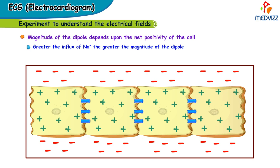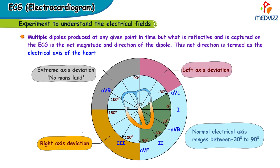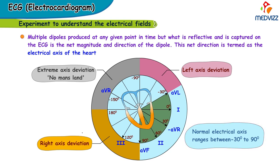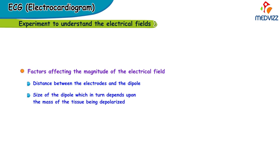Extrapolating this to the three-dimensional heart, there are multiple dipoles produced at any given point in time, but what is captured on the ECG is the net magnitude and direction of the dipole. This net direction is termed the electrical axis of the heart. Factors that affect the magnitude of the electrical field include the distance between the electrodes and the dipole, the size of the dipole — which depends on the mass of tissue being depolarized — and the orientation of the electrodes with respect to the dipole.